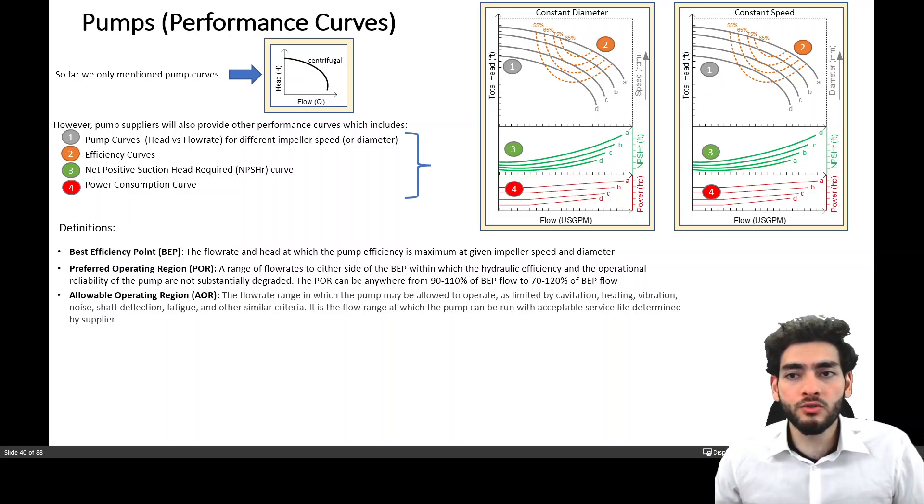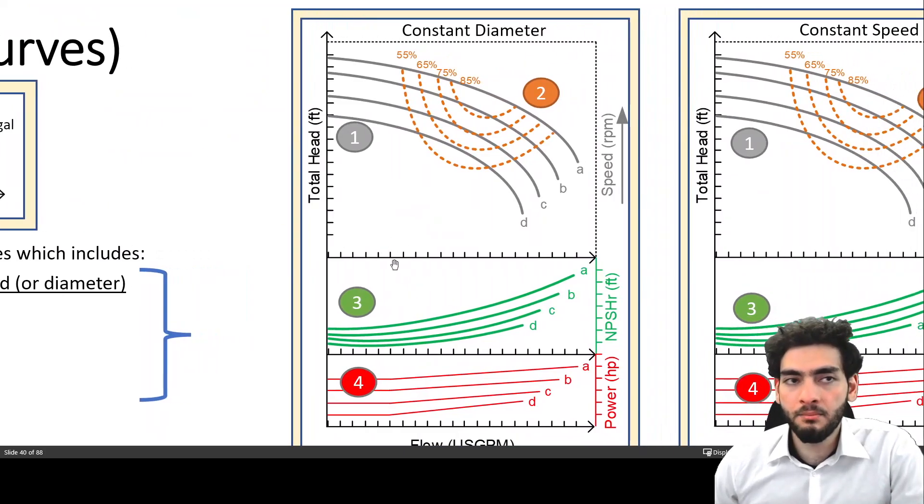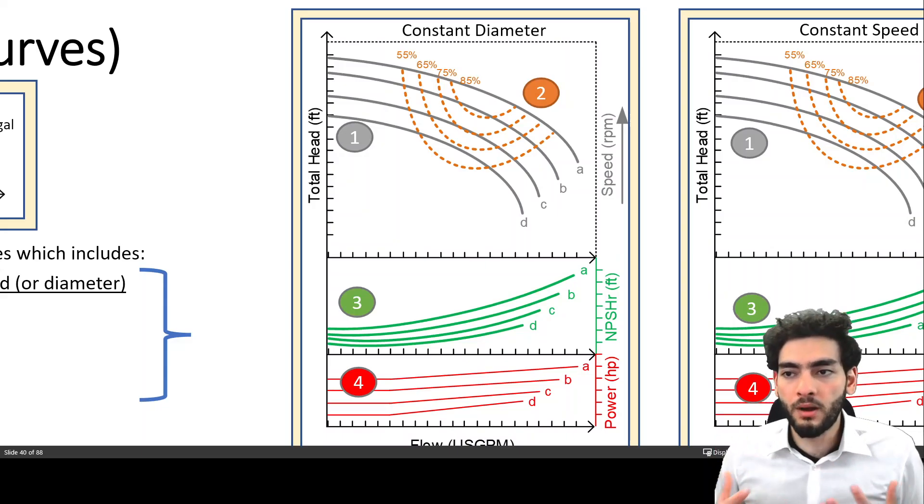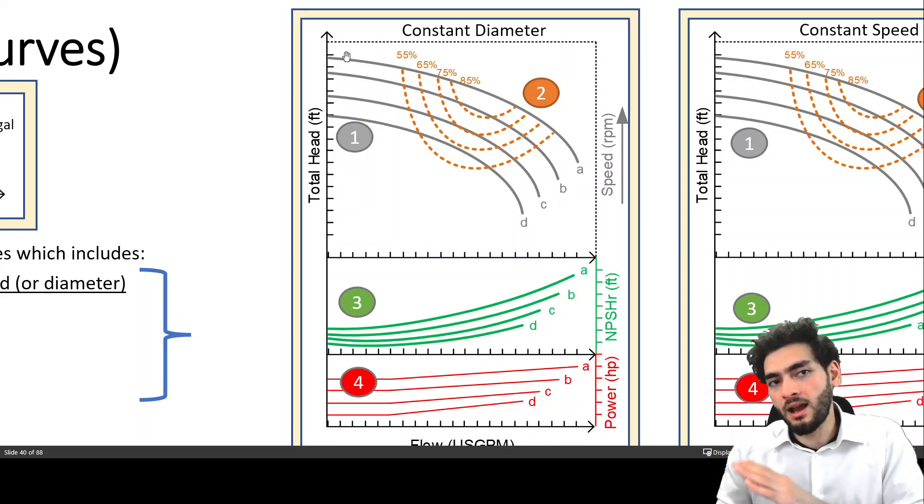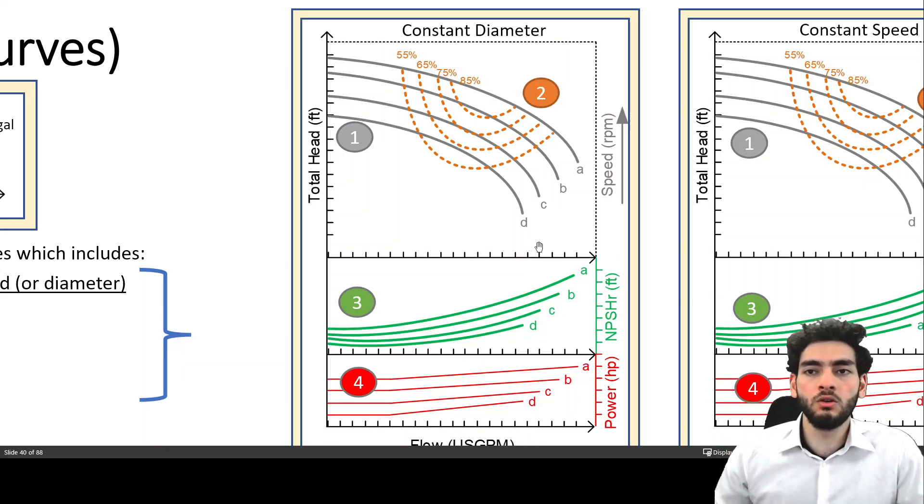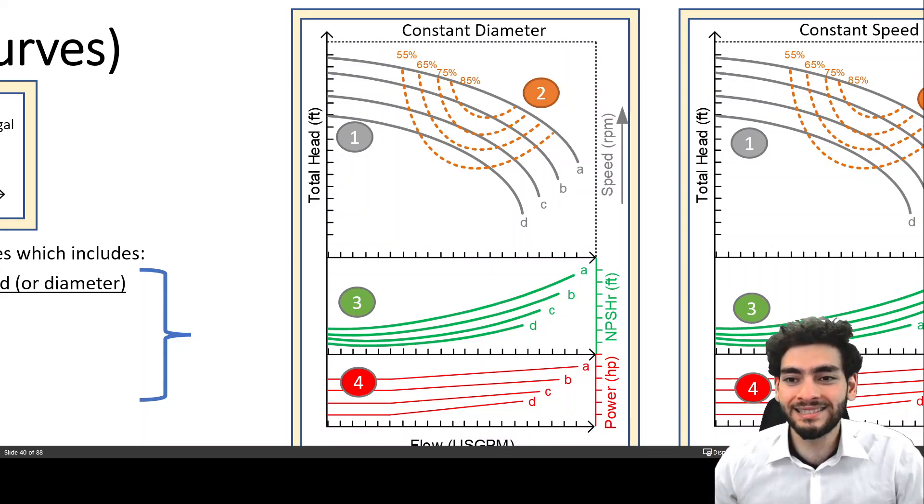So this is a flow rate that the pump supplier will be providing you and he might say never ever run the pump below maybe half a gallons per minute because if you do that then you are essentially damaging your pump. And he will give you like a lower end and then a higher end as well so maybe you never ever want to increase beyond a particular flow rate because then you're also susceptible to damaging the pump. And this number is provided to you by the supplier based on testings that they have done.